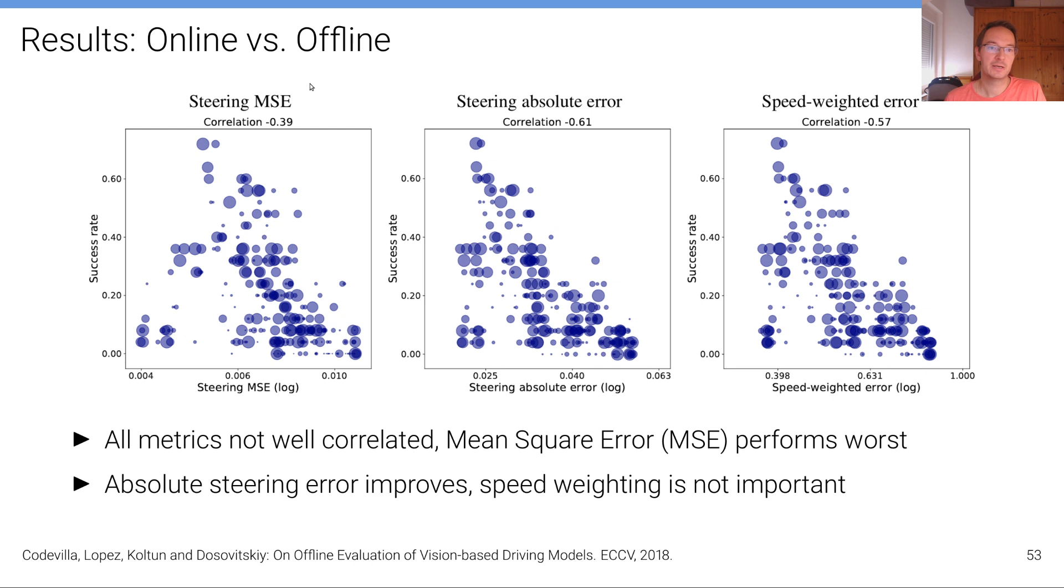However, if we compare online with the offline metrics, we see that all metrics are not very well correlated. For example, here we have success rate versus steering mean squared error, success rate versus steering absolute error or success rate versus speed weighted error. And the correlation scores are plotted on top of these figures.